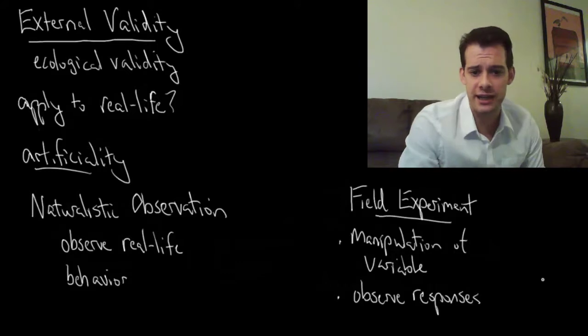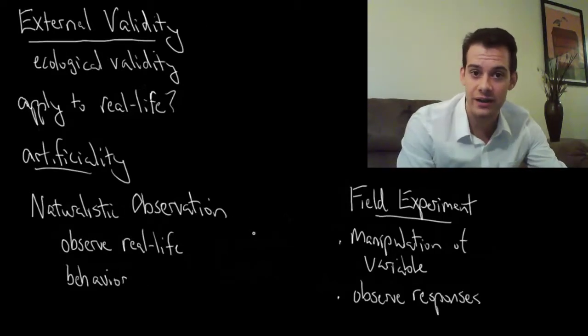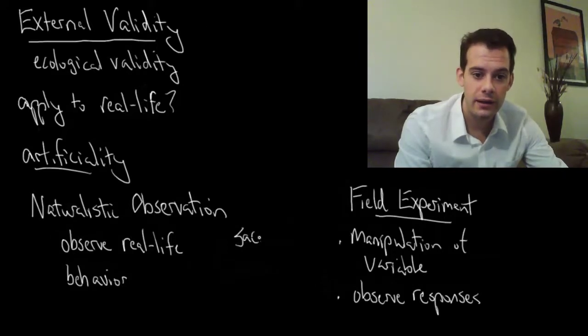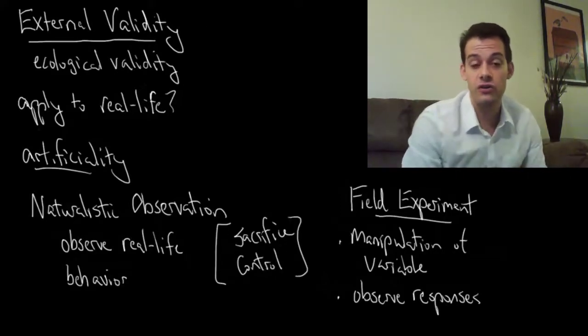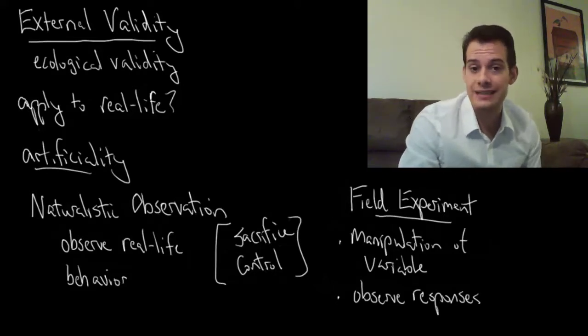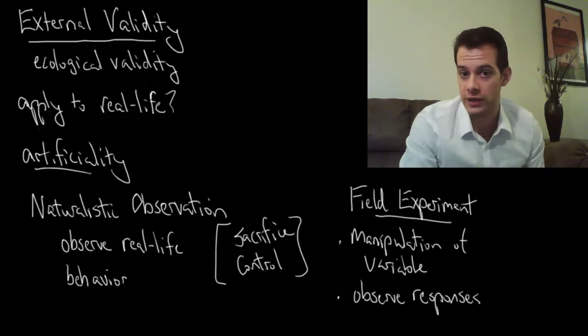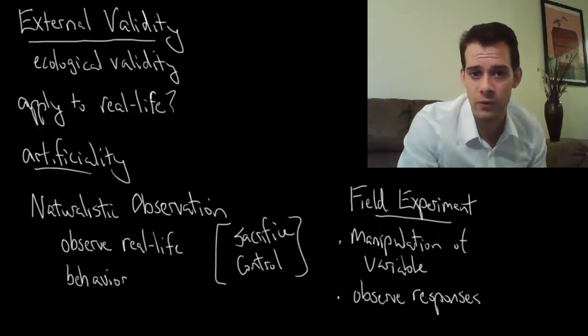Now in both of these cases, naturalistic observation and field experiments, we're sacrificing control. So they both give us greater external validity. We're less likely to be accused of artificiality in the effects that we measure. But in exchange, we have to give up some of our control. We don't have the ability to control certain variables in these studies. So for instance, if I'm measuring shopping behavior, it might be the case that people who shop at this particular store differ in some important way. And I can't manipulate this, I can't control who shops at this store and who doesn't. So if I'm only measuring people that are shopping here, there might be some difference about these people. There might be some other variable that's influencing my results and I don't have any way to control for this.